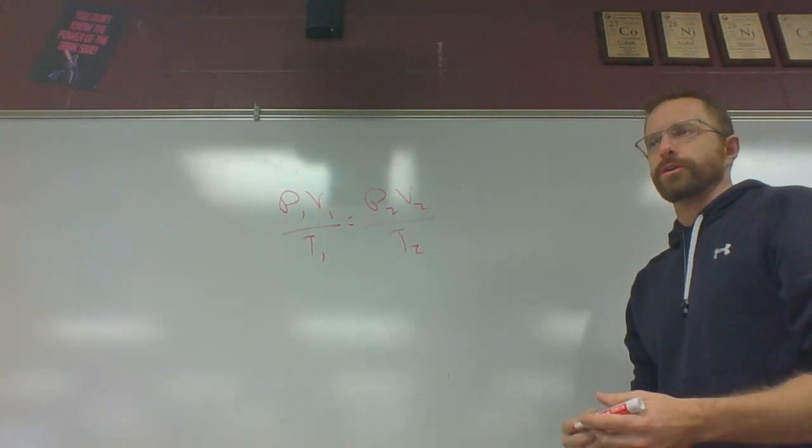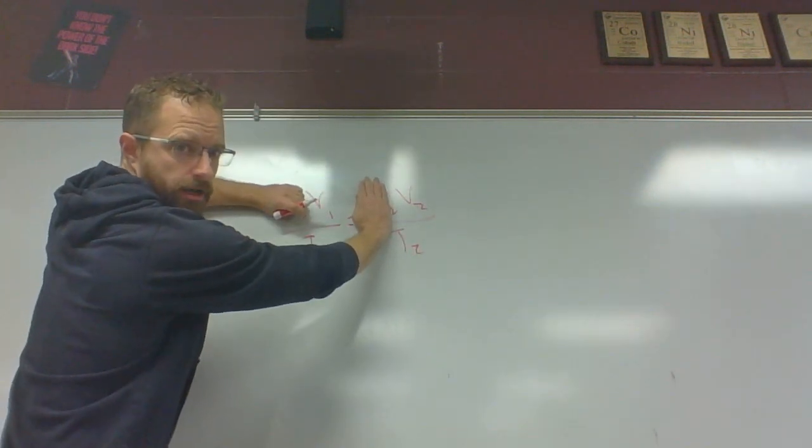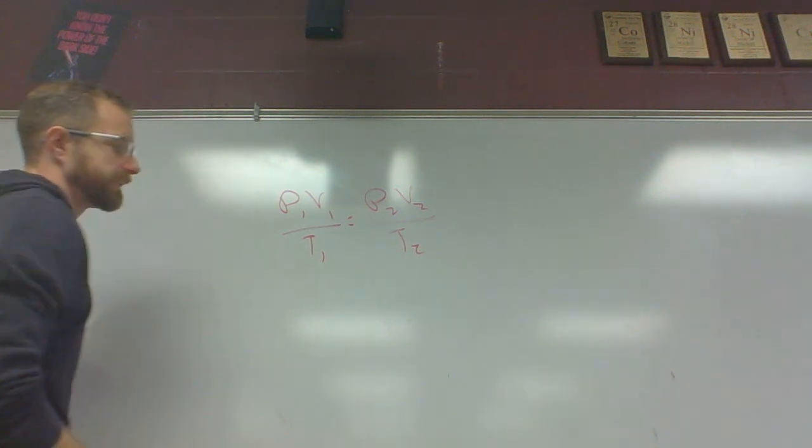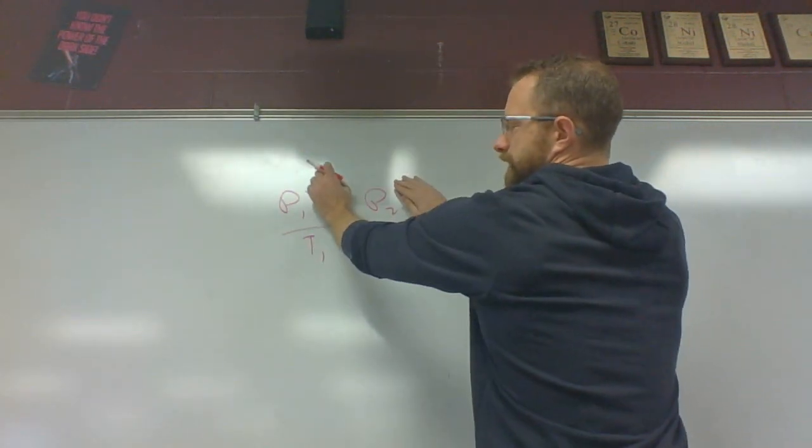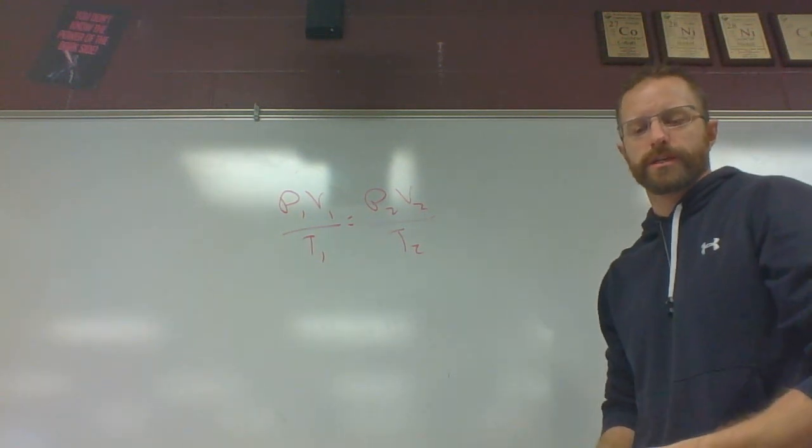In Charles law, you have to hold pressure constant. Well, if I hold pressure constant, now the pressure drops out of there and it's basically V1 over T1 equals V2 over T2. In Gay-Lussac's law, same kind of thing - you've got to hold volume constant. So you go back to Gay-Lussac's law. So this is when you have all three of those things changing.